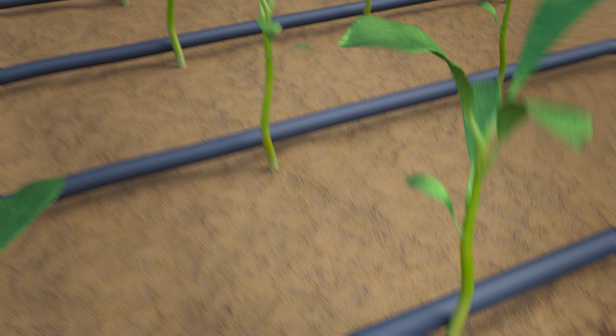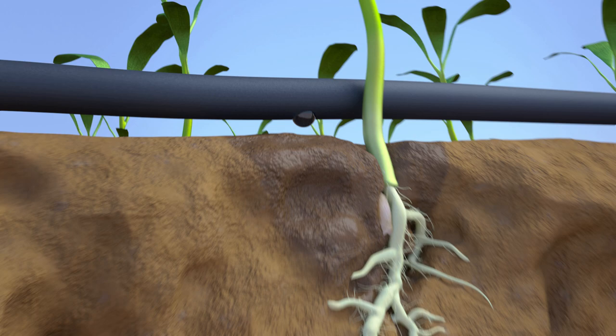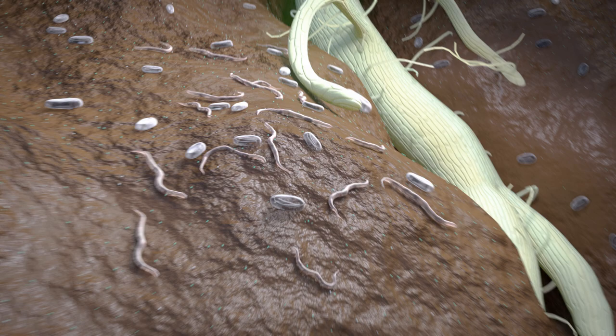Fluopuram from Bayer stops the attack. The active substance is applied to the soil via a drip irrigation system, allowing it to precisely target the root system.